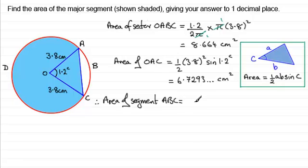It's going to equal the area of the sector, which was 8.664. And then from that we subtract the area of the triangle, which was 6.7293 and so on. And if you do that, you end up with 1.9346 and so on. And that will be measured in centimeter squares.